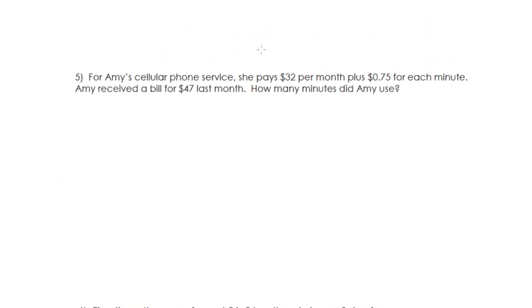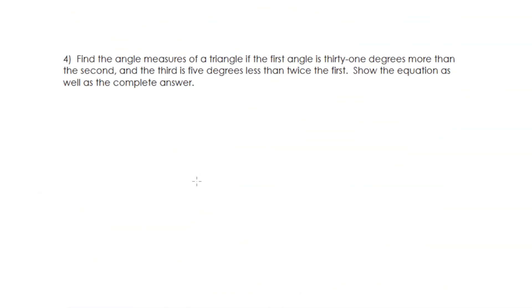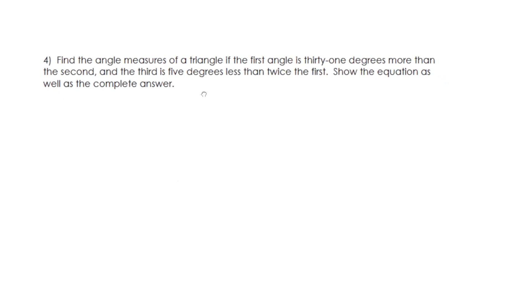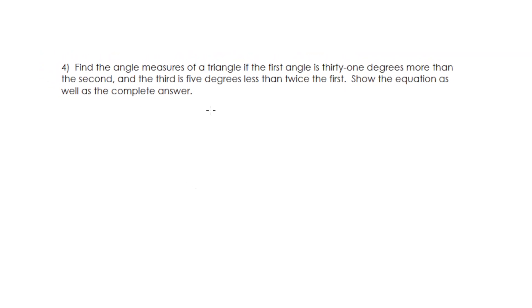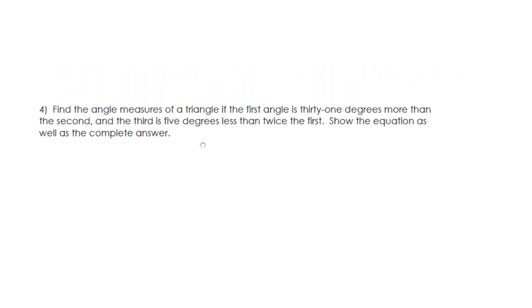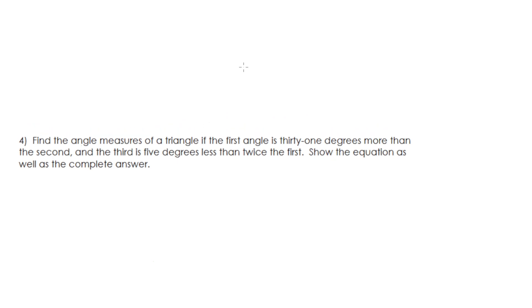Alright, let's go find our next question. Here we go. This was my favorite one in the batch here. Find the angle measures of a triangle if the first angle is 31 degrees more than the second and the third is five degrees less than twice the first. Show the equation as well as the complete answer.